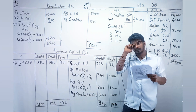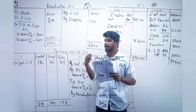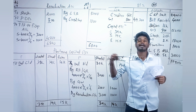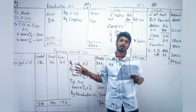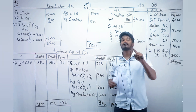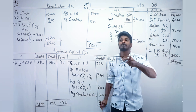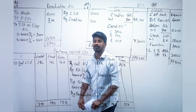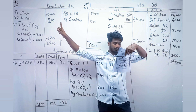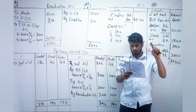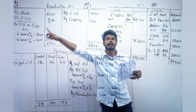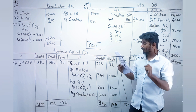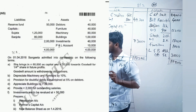Point E: provide 2,000 for outstanding salary. Outstanding salary means the company did not pay salary to its employees, so it creates a liability for the organization. If liability is increasing, we record it on the debit side. So write outstanding salaries of 2,000 on the debit side of the revaluation account.